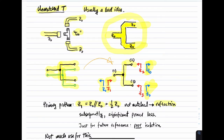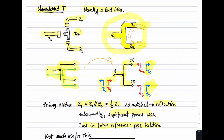This is bad for two reasons. One is you have a reflection, so you have to worry about that for whatever device is attached to the input. You also have significant power loss — not through dissipation, but through reflection. I'll also say this thing has poor isolation. Isolation refers to the tendency of signals to circulate in undesired directions. For example, a signal on port 2 ending up at port 3 would make this difficult to use as a combiner, and similarly a signal from port 3 ending up on port 2.